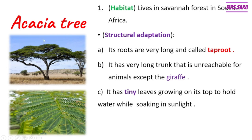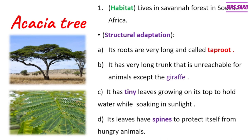After the trunk we have leaves. The leaves of the acacia tree grow on the top of the tree, and it has tiny leaves. Why does it have tiny leaves? To hold water while soaking in the sunlight. Soaking means the leaves of acacia trees are standing in the sunlight for a long time. Also, the leaves of acacia tree have spines to protect itself from hungry animals.